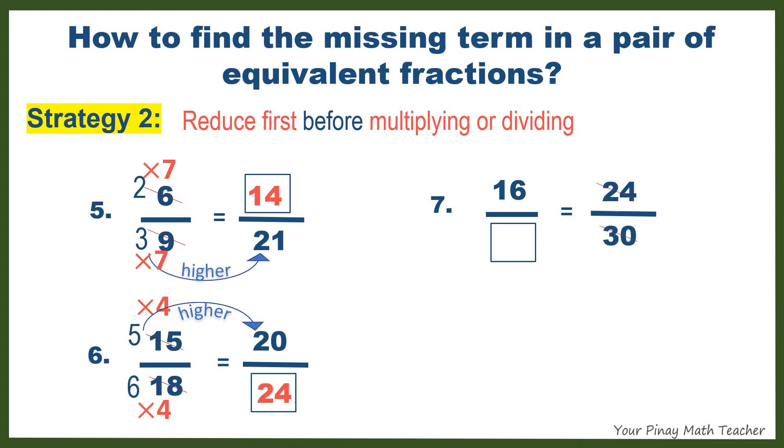Number 7. 24 over 30 can also be reduced, but this time by 6. 24 divided by 6 is 4. 30 divided by 6 is 5. 4 gets higher to 16. So we have to multiply 4 by 4 to get 16, and do the same with 5. So the missing term in number 7 is 20.